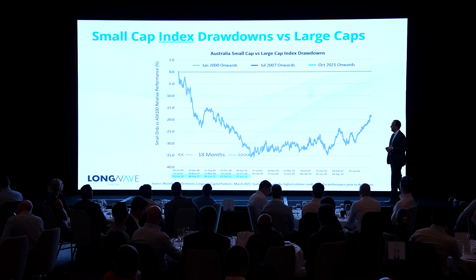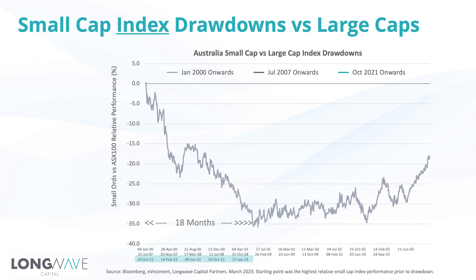Let's start with the tech bubble bursting. Starting at the highest point of small cap versus large cap outperformance at the beginning of 2000 — these are index versus index returns, the small cap index against the ASX 300 — it was a pretty rough ride. It took 18 months for small caps to stop underperforming, and they underperformed by 35% over that period. The market was concerned about a recession that didn't end up happening in Australia, but that recession fear did get baked into small caps.